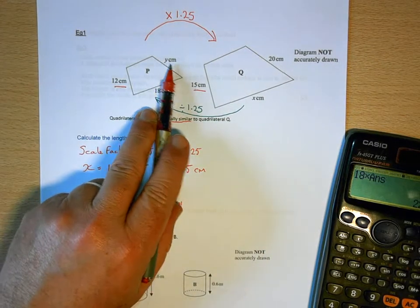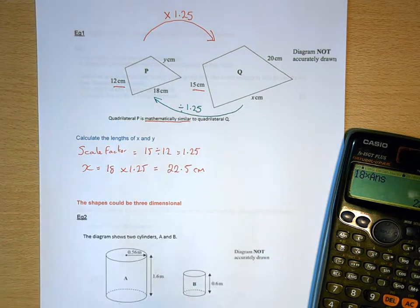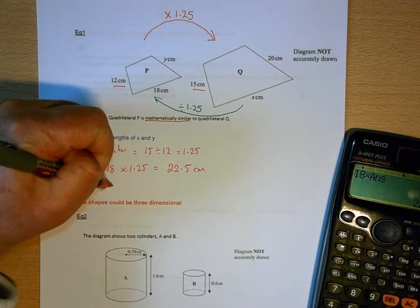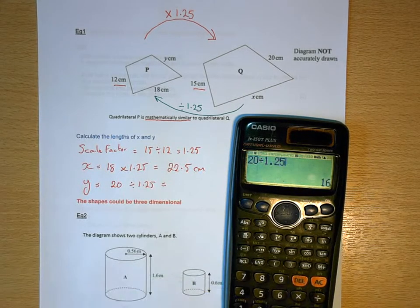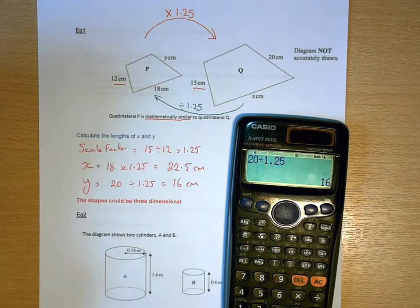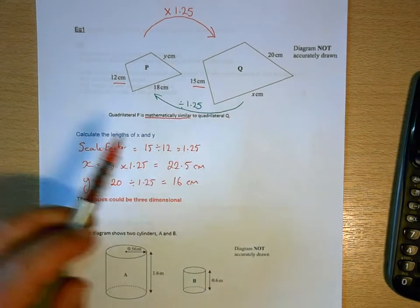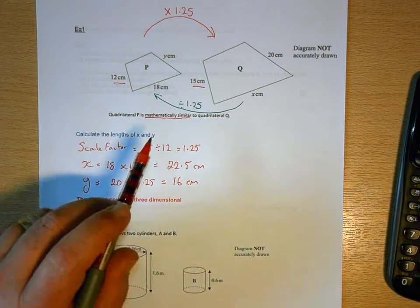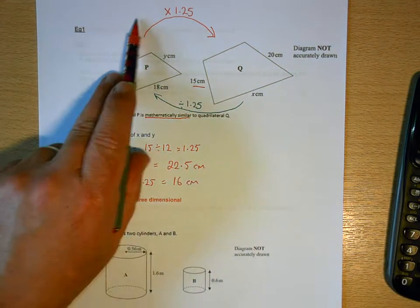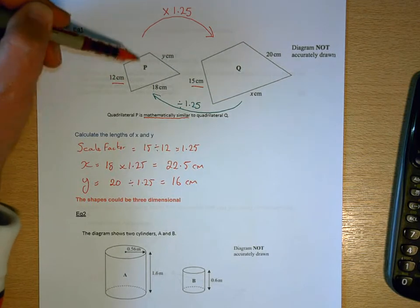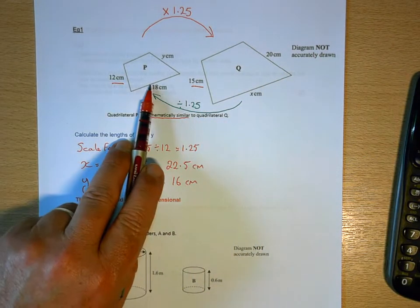Now I need to find y. I look for the corresponding side in Q and because this time I'm shrinking — going from larger to smaller — I divide. So y = 20 ÷ 1.25 = 16 centimetres. From a revision point of view: the trigger is the word 'similar'. Step one — find the scale factor by finding corresponding sides and dividing the largest by the smallest. If taking a side in the smaller shape to find the bigger, multiply. Going from larger to smaller, divide.